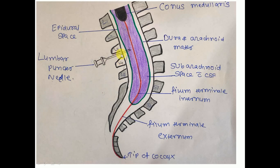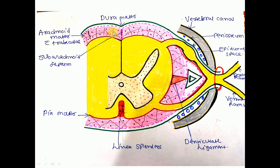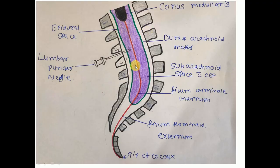The lumbar cistern allows the procedure known as lumbar puncture. We withdraw CSF with the help of a lumbar puncture needle from the lumbar cistern for the diagnosis of certain neurological diseases. The needle pierces the overlying structures — supra-spinous ligament, interspinous ligament, then it pierces the dura mater and arachnoid mater, and enters the lumbar cistern. The withdrawn CSF is sent for pathological examination so we can diagnose various neurological disorders. The subarachnoid space also extends up to the posterior pole of the eyeball.